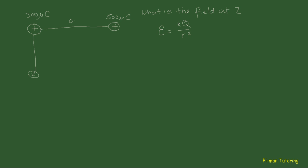We'll say that this is 0.8 meters and that this is 0.6 meters. If you do the Pythagoras you'll find that the total distance from charge number two — let's label these 1 and 2 — is actually 1 meter. So we've got two distances and we're all set to go.